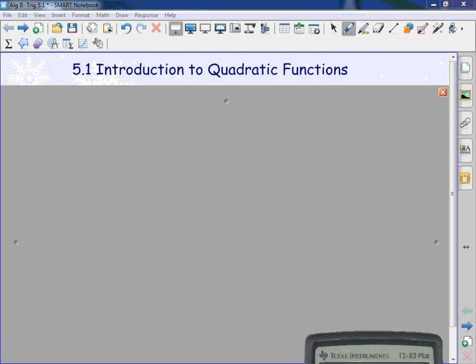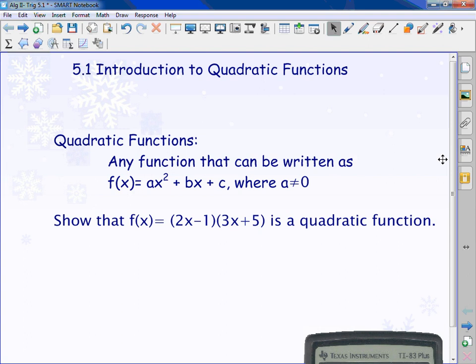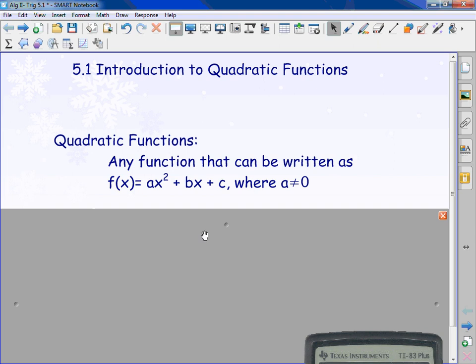Today we're starting 5.1 Introduction to Quadratic Functions. We are skipping chapter 4 like I said before. First thing, a quadratic function. All that a quadratic function is, it's any function that can be written as f(x) = ax² + bx + c, where a is not equal to zero.